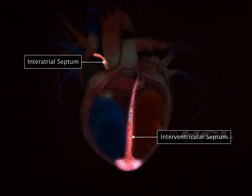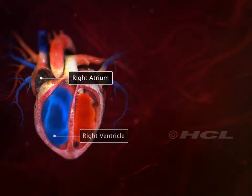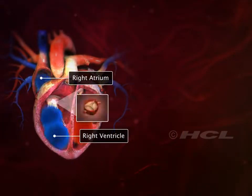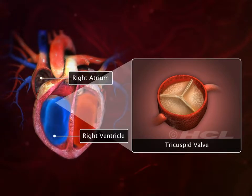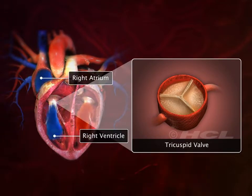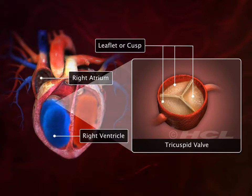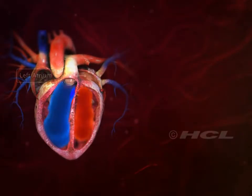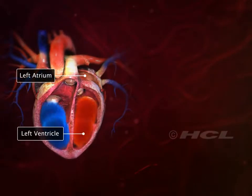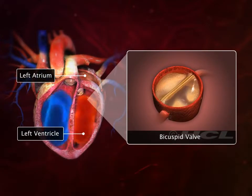The right atrium and right ventricle are connected through a tricuspid valve. As the name suggests, it has three leaflets or cusps. On the other side, the left atrium and ventricle are connected through a bicuspid valve.